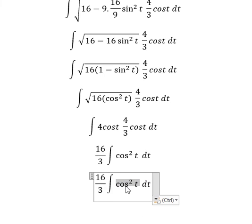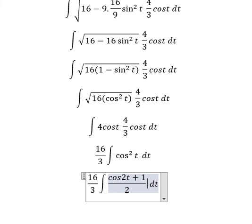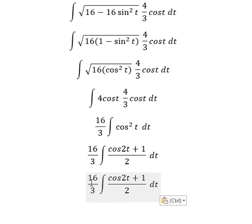Cosine t square we change for cosine 2t plus 1 over 2. So we put number 2 outside and we have 16 over 3 multiplied by 1 over 2, and we have 8 over 3.